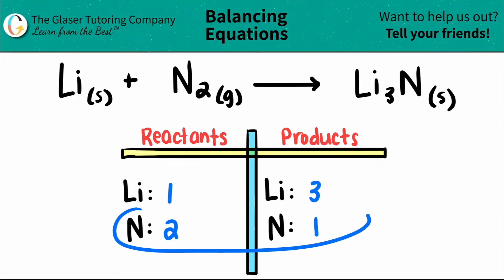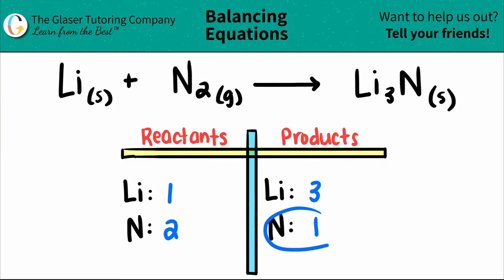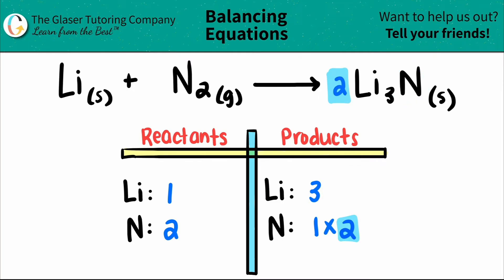Let's start off with the nitrogen. I see that I have two nitrogens here and only one here, so let's balance it out. I always bring the lower number to the higher number by multiplication. One times what will get me to two? One times two. And that number is the coefficient that goes in front of the element you're talking about. So I'm going to put a two here, but you've got to be fair — whatever coefficient you put, it has to get distributed to all the elements in that compound. So the lithium and the nitrogen are going to change.